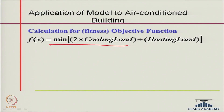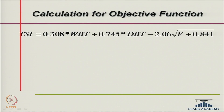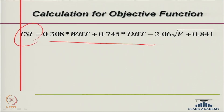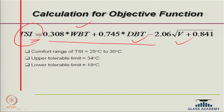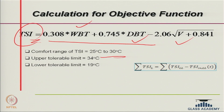The objective function to minimize is twice the cooling load plus the heating load, because heating is cheaper than cooling, which is why the factor of two is applied. You can also define a fitness function. Another approach is for naturally conditioned buildings: you can use a comfort index like the Tropical Summer Index specified in SP 41, which is related to wet bulb temperature, dry bulb temperature, relative humidity, and air velocity, and minimize the deviation from the comfort zone.